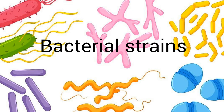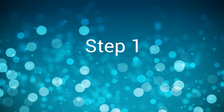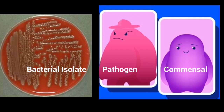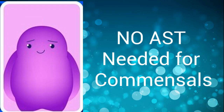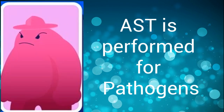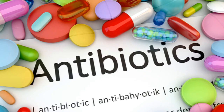Bacterial strains show a lot of variation in their susceptibility to antimicrobial agents. The first step in the process is to isolate bacteria from the clinical samples. Next, we identify the isolated bacteria as pathogenic or commensals. We do not perform AST for the commensal bacteria. AST is then performed for the pathogenic bacteria. The antibiotics used for testing are those that are most likely to be used for the treatment of the pathogenic bacteria.